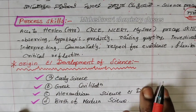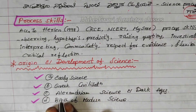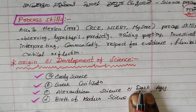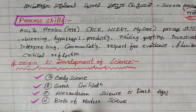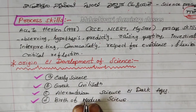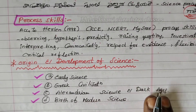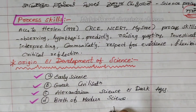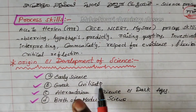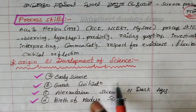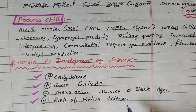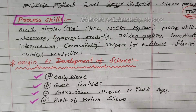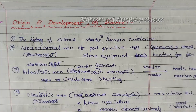Origin and Development of Science covers where science begins. We will learn how science developed as a new world. This topic has 4 parts: 1. Early Science Period, 2. Greek Civilization Period, 3. Alexandrian Science and Dark Ages Period, 4. Birth of Modern Science Period.